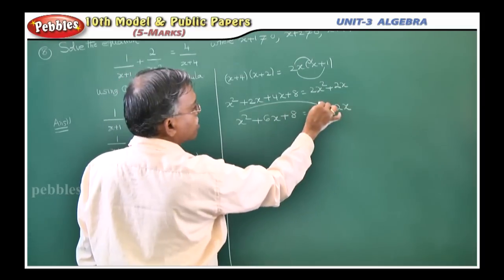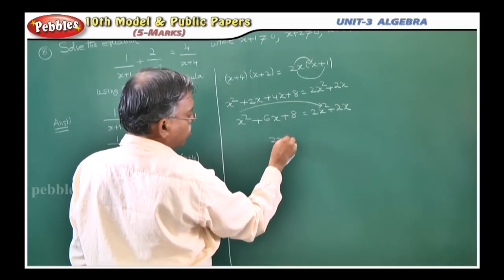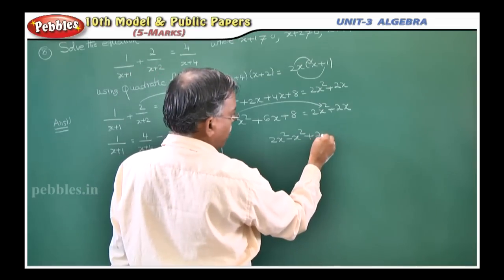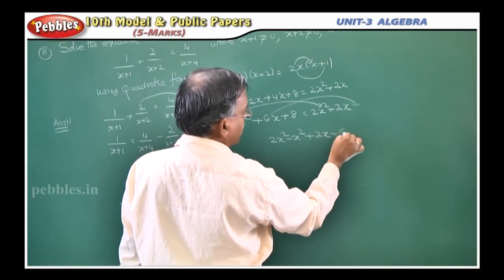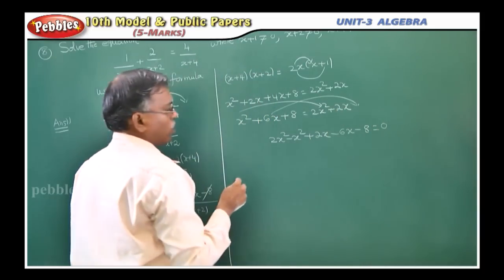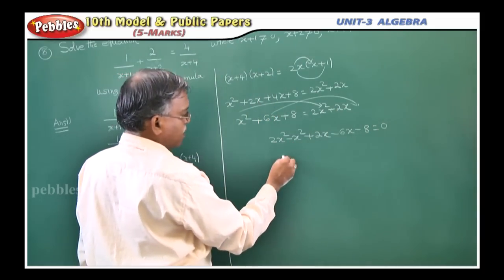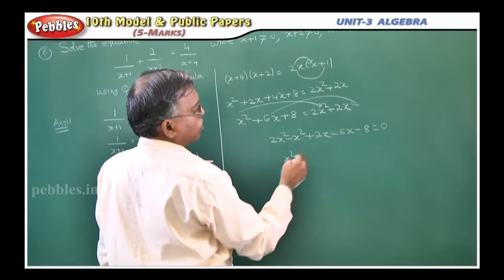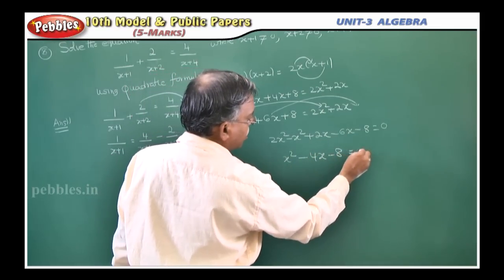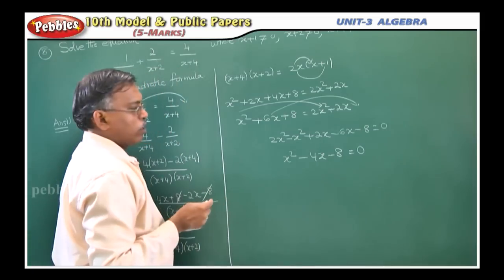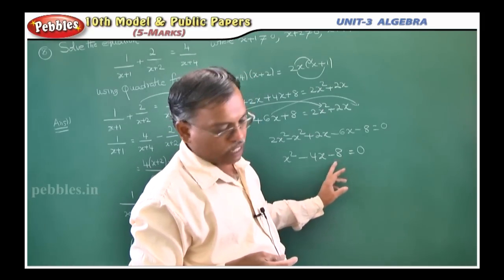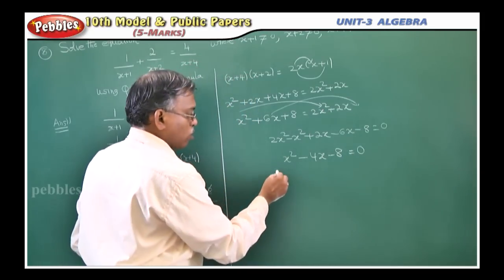Now bring all terms to one side to arrange it as a quadratic equation. Bring 2x² to the left: 2x² − x² = x². Bring 2x to the left: 2x − 6x = −4x. So the equation becomes x² − 4x − 8 = 0.